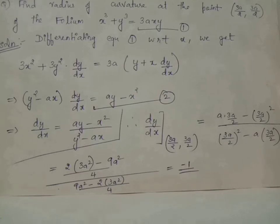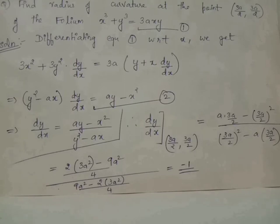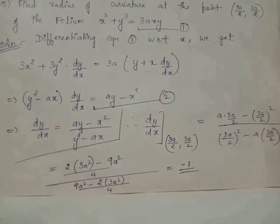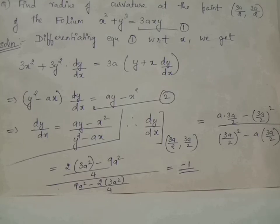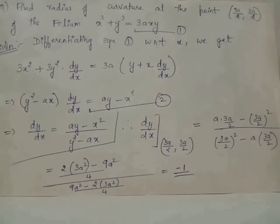Since we are asked to find the radius of curvature at the particular point (3a/2, 3a/2), we evaluate dy/dx at this point by replacing every x and y with 3a/2. Thus dy/dx at (3a/2, 3a/2) equals −1.